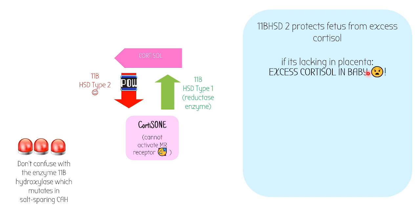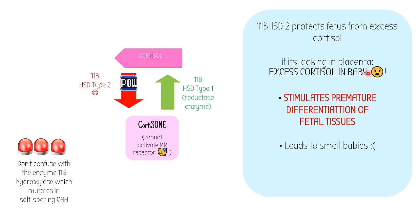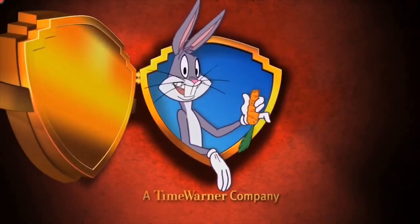If this enzyme is lacking, you get excess cortisol on the baby. This stimulates premature differentiation of fetal tissues, for example your adrenal glands. This is a growth disorder and leads to small babies, so it's a bad thing. A little guy called Barker named this hypothesis. Babies born with this have an increase later on of serious diseases. That's the Barker's hypothesis, when this enzyme is not present in your placenta. And that's the end.